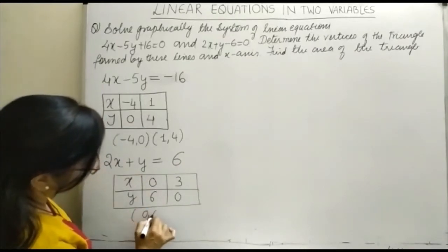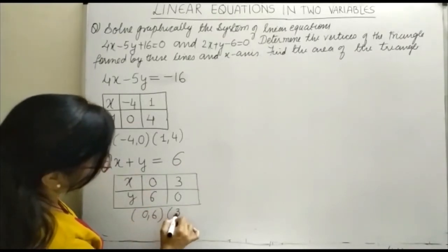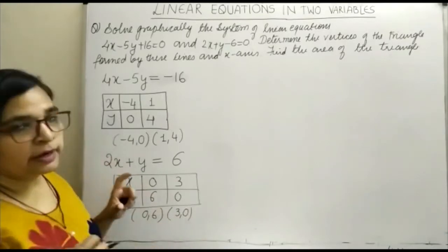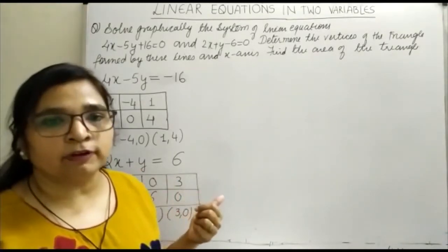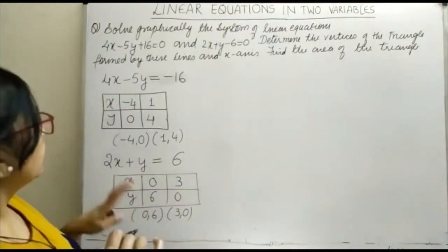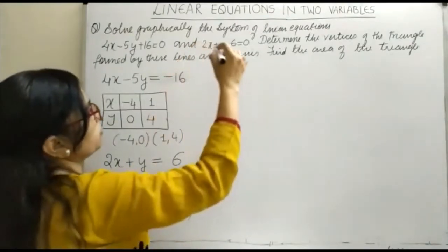So we have the ordered pairs: x is 0, y is 6, and when y is 0, x is 3. So the ordered pairs are 0, 6 and 3, 0. When writing ordered pairs, the x coordinate comes first and y comes second. Now let us make the graph.